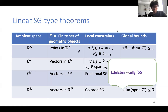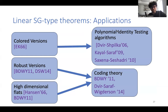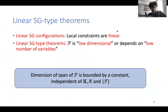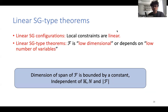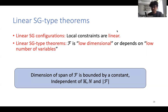All these Sylvester-Galai type theorems have found numerous applications in computer science — for example, in polynomial identity testing algorithms and coding theory. To summarize: all the local constraints we saw were some kind of linear dependence, yet all the theorems told us that the configuration is low-dimensional. Notably, the bound on the dimension of the span of F does not depend on the number of variables, the dimension of the ambient space, or the cardinality of the set, and is most of the time independent of the field.